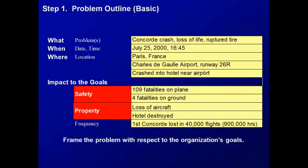This is the basic problem outline of the Concorde incident. You can see that we've captured the problem, the date and time, and location, as well as some additional information specifying where the incident occurred. We also capture the impacts to the organizational goals. Specifically, the safety goal was impacted because of the 109 fatalities on the plane and the four fatalities on the ground, specifically within the hotel. Additionally, the property goal was impacted due to the loss of the aircraft and the destruction of the hotel. This was the first Concorde that was lost in 40,000 flights, which is approximately 900,000 flight hours.